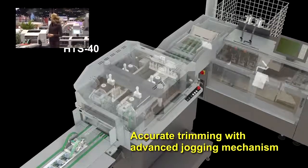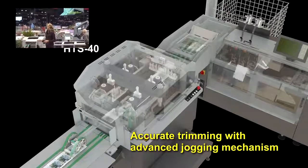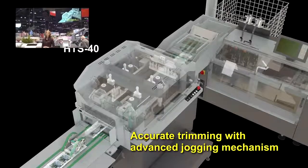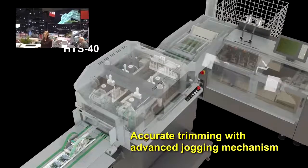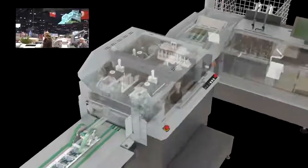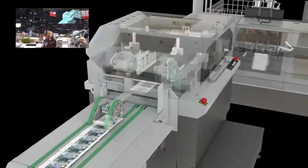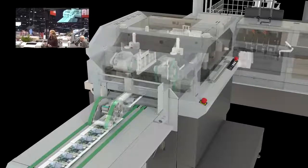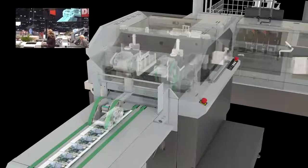Booklets are jog-registered at the face trim and on all four sides before the bottom trimming, which means more accurate trimming. Center-cut knives are also available for two-up production, and books are delivered to the output conveyor for easy offload.